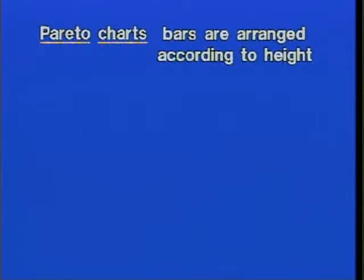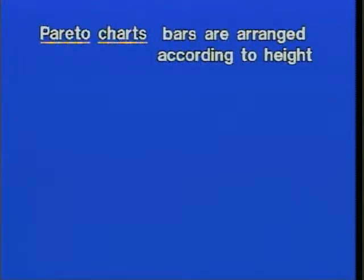A special kind of bar graph is called a Pareto chart. Pareto charts have the characteristic that the bars are arranged according to height. This is particularly useful when the lower axis is not a timeline, and Pareto charts are useful in identifying the most or least frequently occurring items in a particular survey.